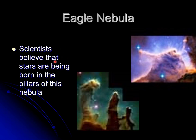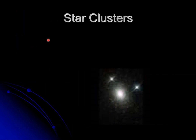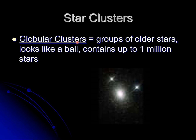There are also star clusters. One type is globular clusters — a group of older stars that looks like a ball and contains up to one million stars. These are all older stars, and a group of them forming a ball shape containing up to one million stars is called a globular cluster.